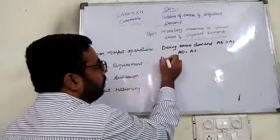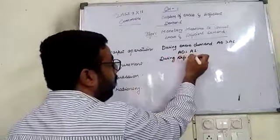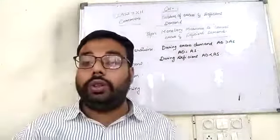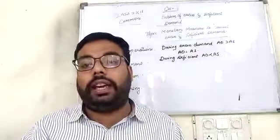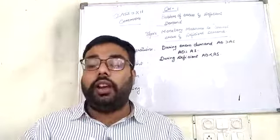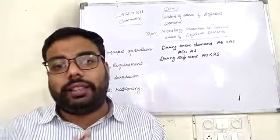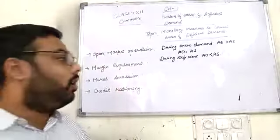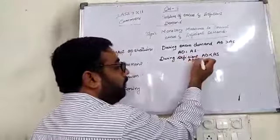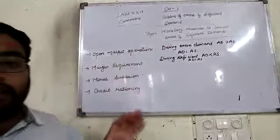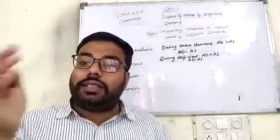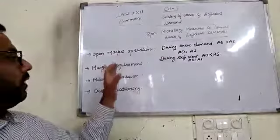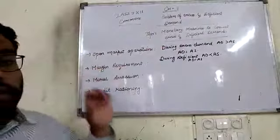During deficient demand, RBI will purchase the securities from the general public, so that money flows back into the economy. So to summarize: during excess demand, RBI sells government securities, and during deficient demand, RBI buys back the securities from the market.